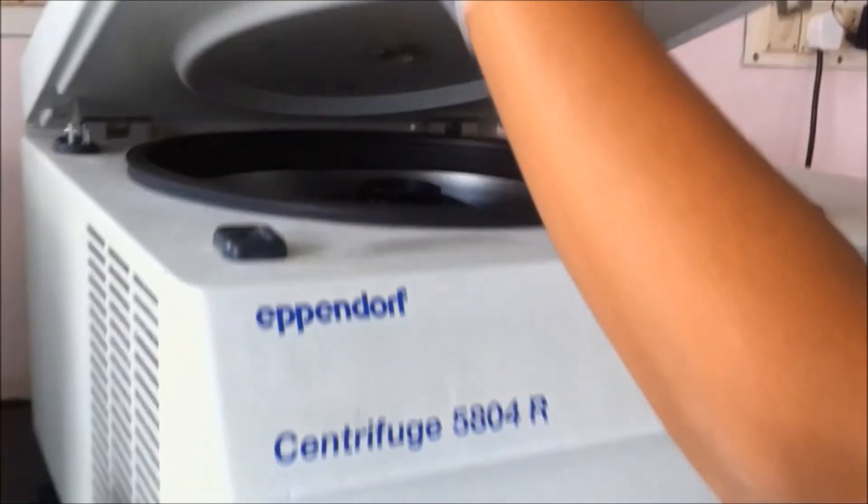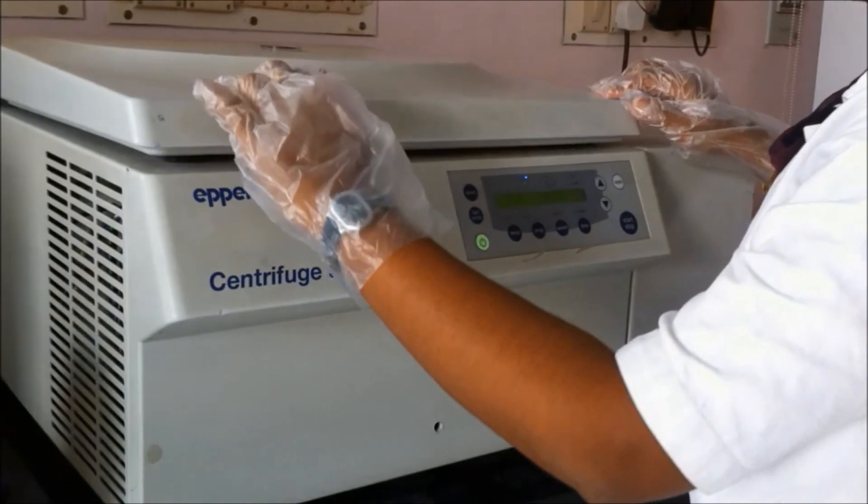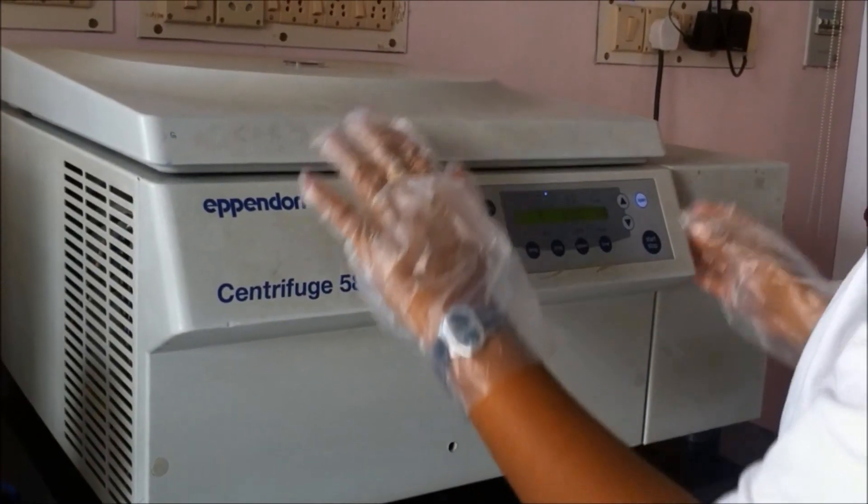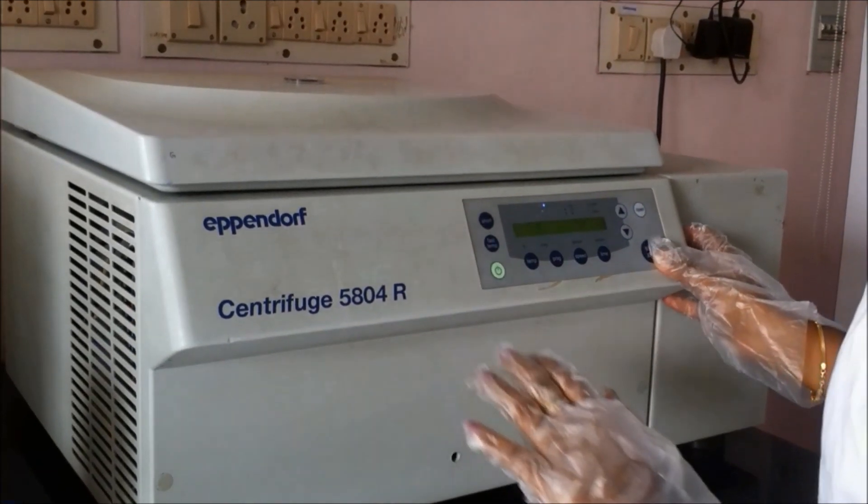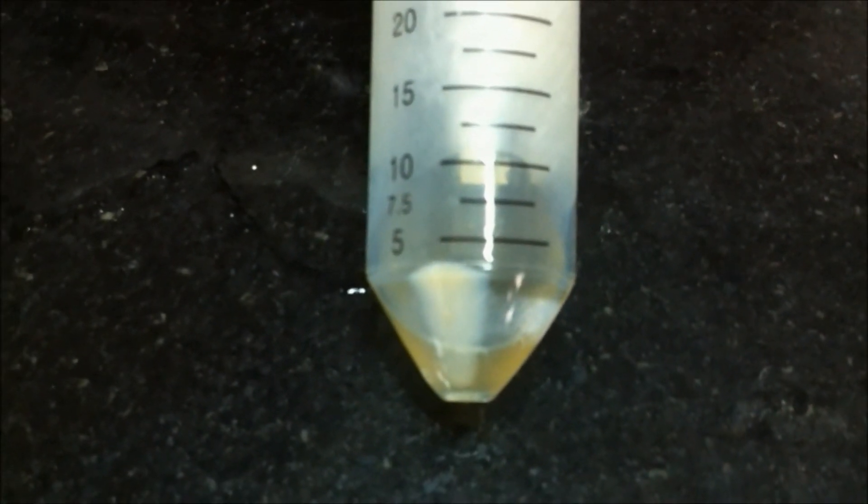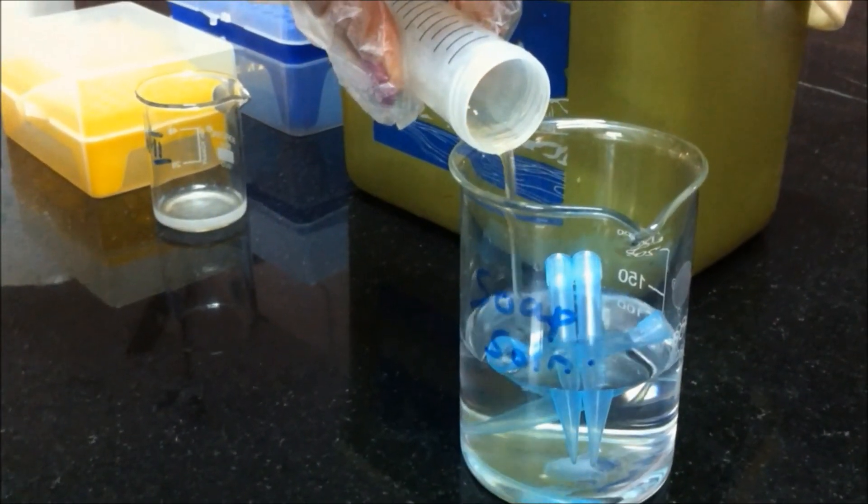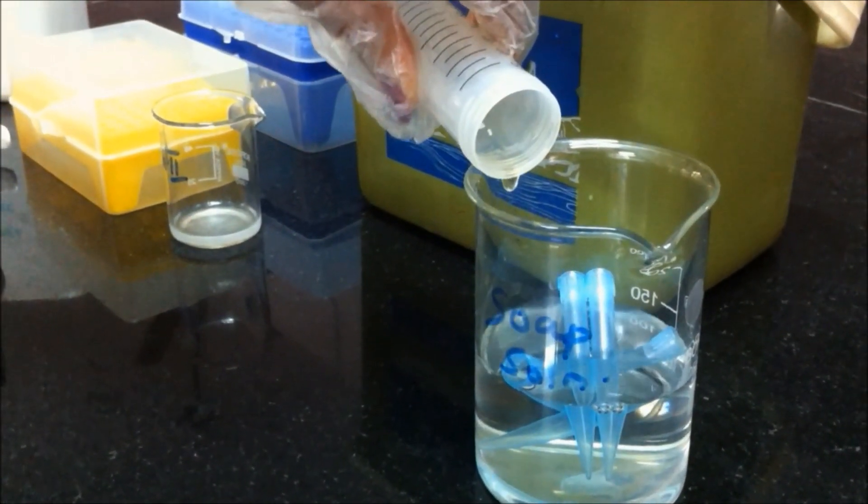If the cells are centrifuged for a long time, it will be more difficult to resuspend the cell pellet. The pellet is formed. Discard the supernatant and retain the pellet.